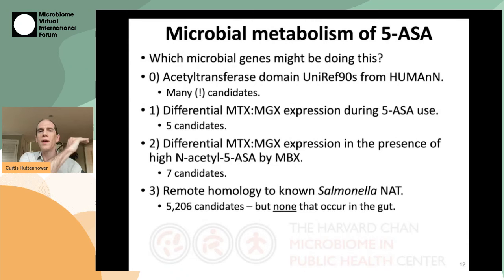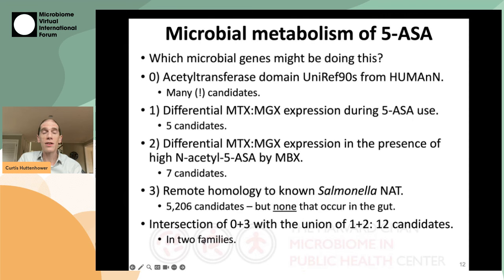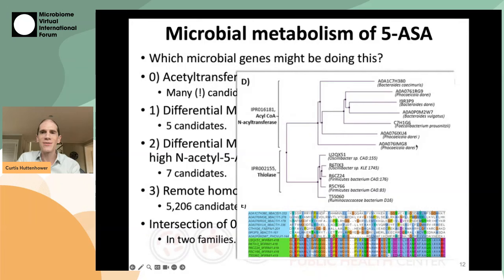The first criterion turned up five significant hits; the second turned up seven. These turned out to be non-overlapping, so we had 12 candidates overall. Even the one known enzyme able to make this transformation — a Salmonella N-acetyltransferase — has about 5,000 potential candidates with remote homology but none occurring in the gut microbiome. So we focused on these 12 candidates, which turned out to occur in two different sequence families: one predominantly Bacteroidetes-carried with one interesting probable horizontal transfer exception, and one tightly conserved mainly among Firmicutes members.